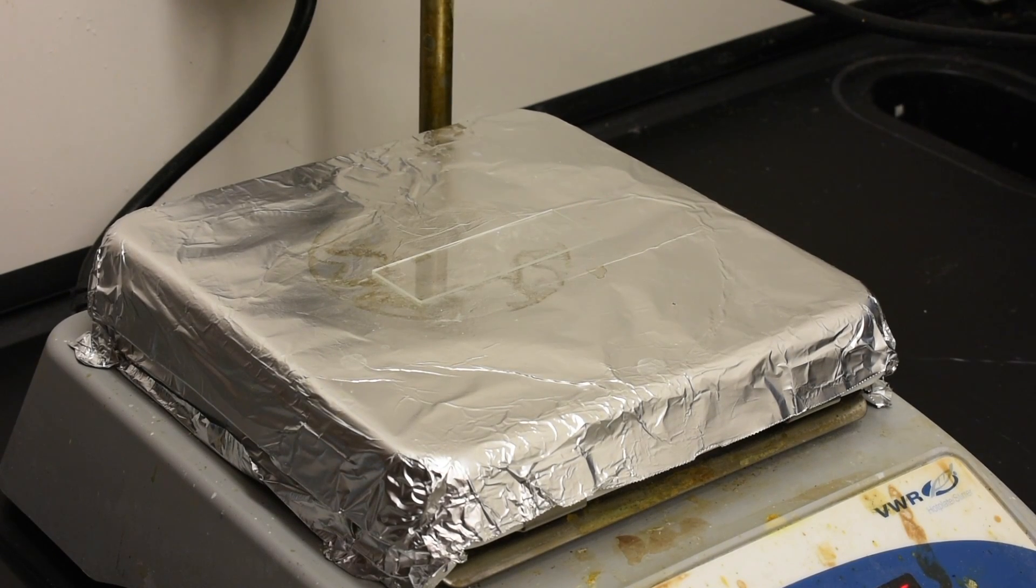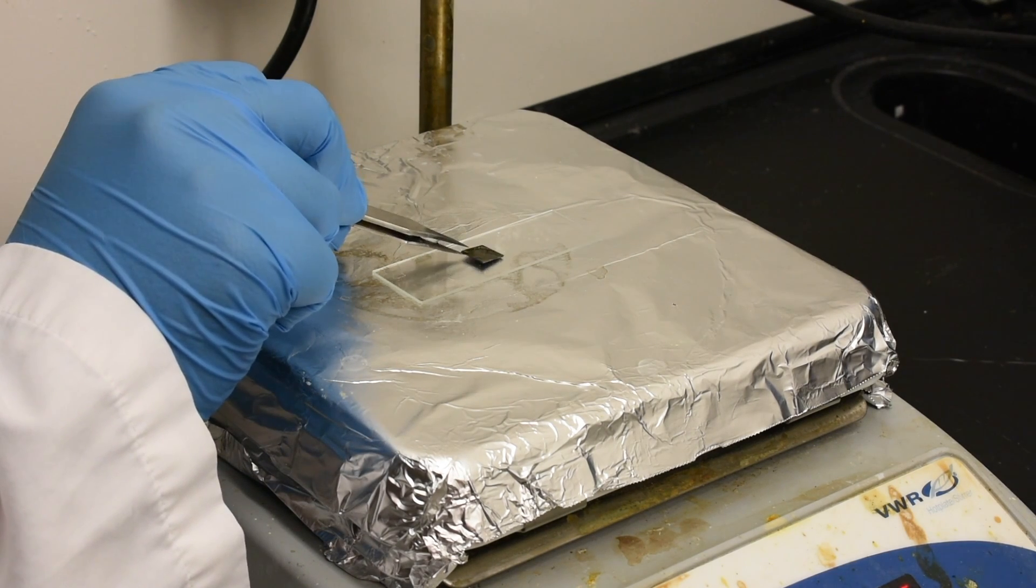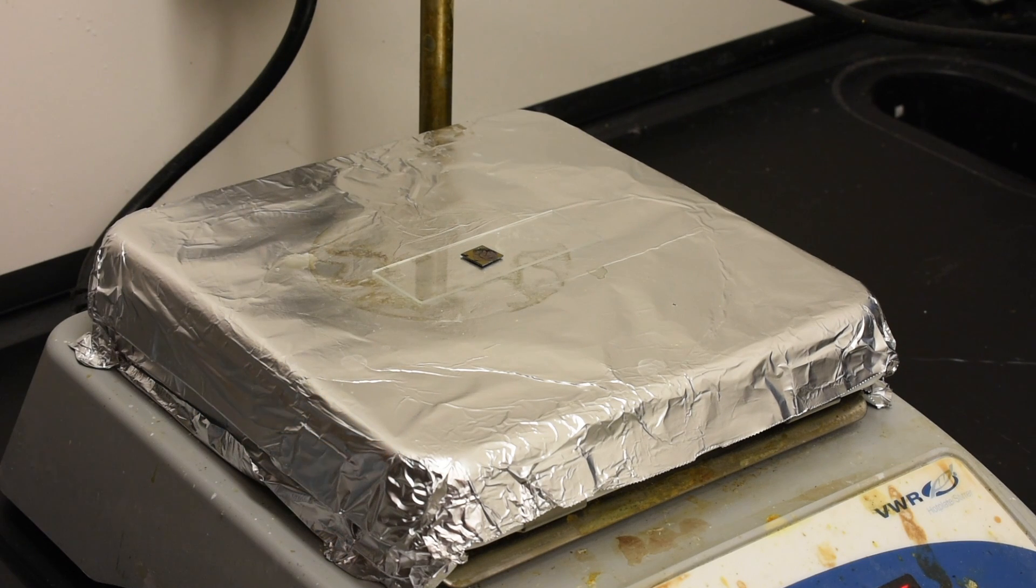The PMMA and thin film on a silicon substrate is then placed on a hot plate for 10 minutes at 50 degrees C, followed by 10 minutes at 70 degrees C.